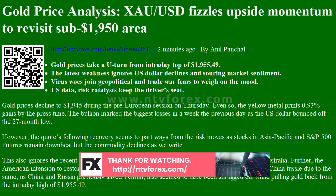This also ignores the recent surge in coronavirus COVID-19 numbers from Germany and Australia. Further, the American intention to restore almost all United Nations' sanctions on Iran, and the likely U.S.-China tussle due to the same — as China and Russia previously saved Tehran — also seemed to have been shrugged off while pulling gold back from the intraday high of $1,955.49.